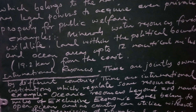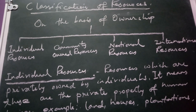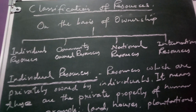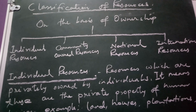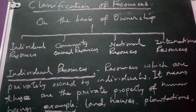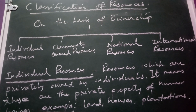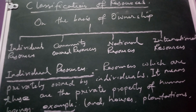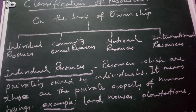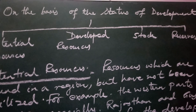To sum up resources on the basis of ownership: individual resources belong to a particular person; community resources belong to the members of the society; national resources belong to the entire nation; and international resources belong to all the countries of the world. For international resources, countries must have the permission of international organizations to use them.